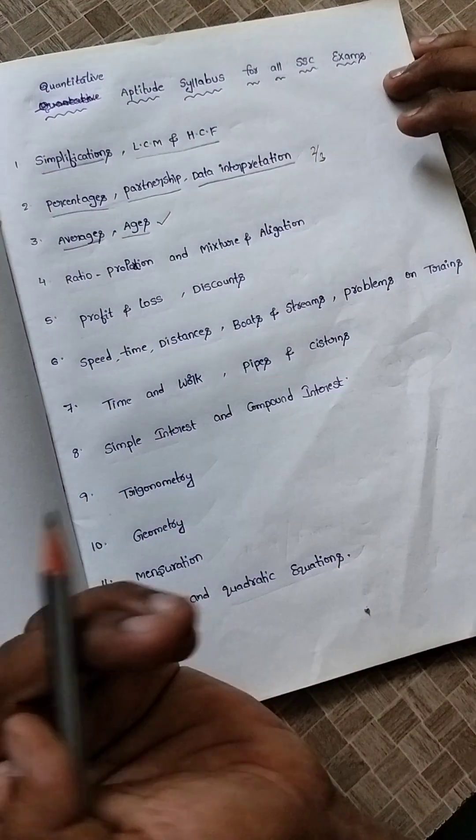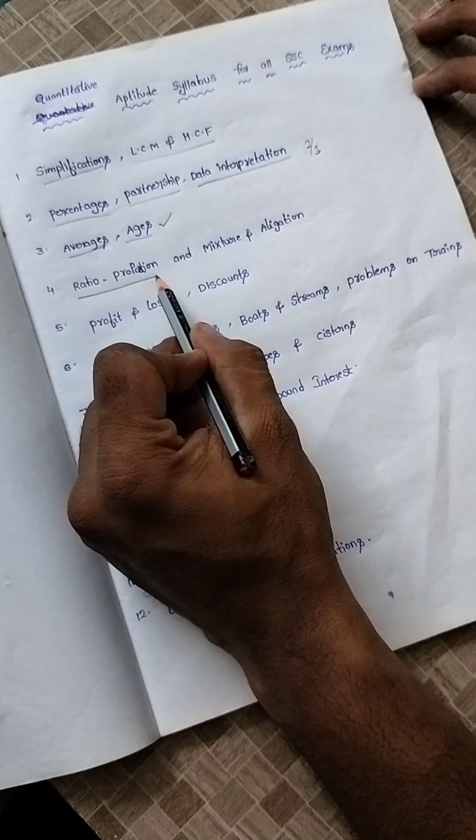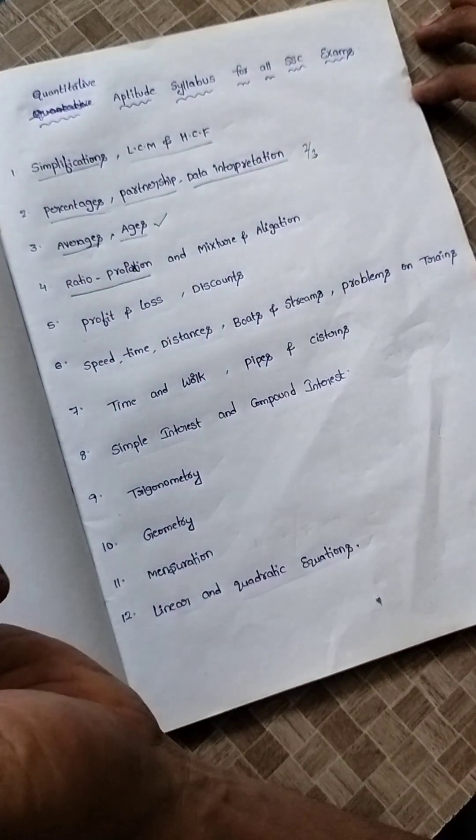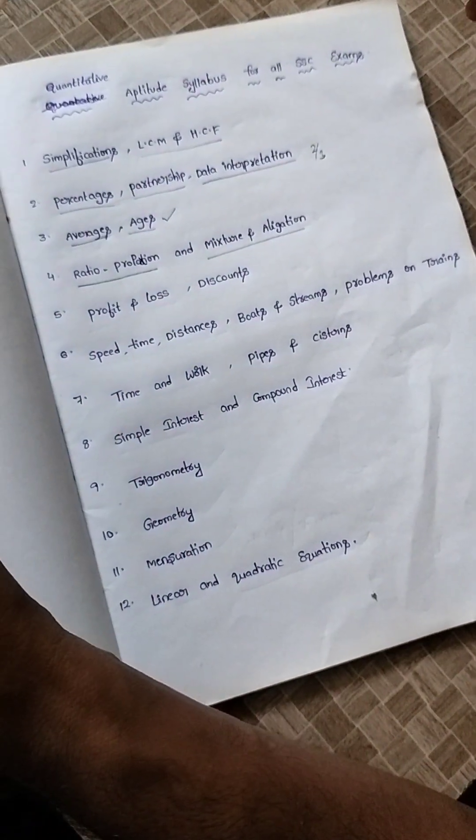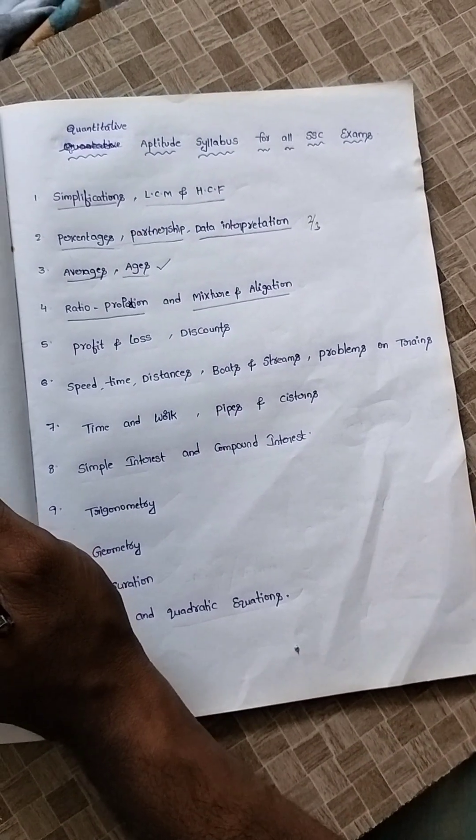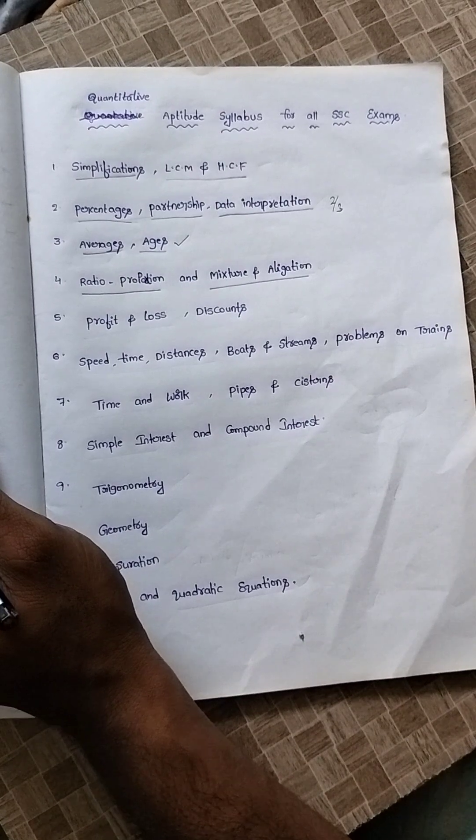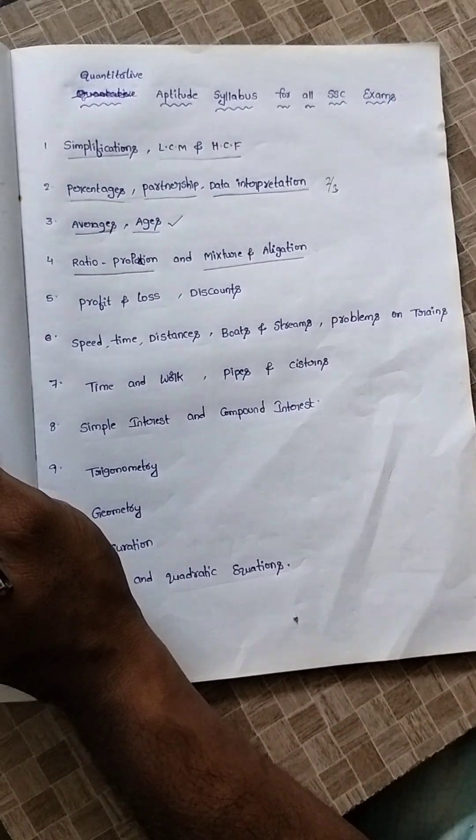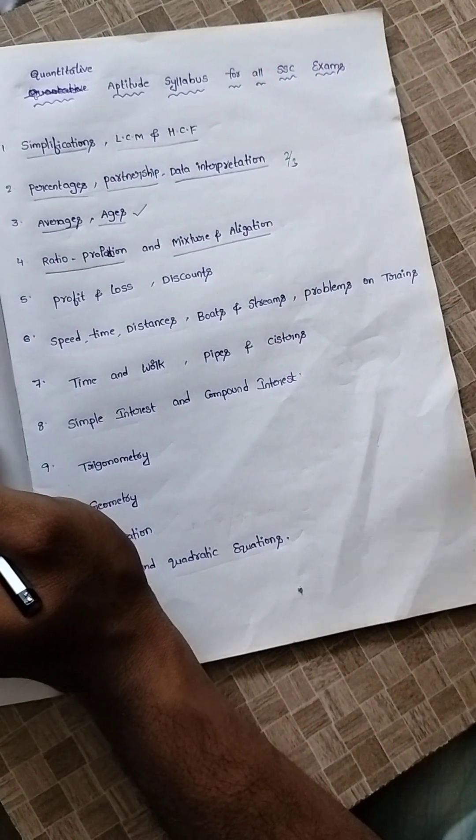Like state police as well as any groups, SSC exams. After that, ratio and proportion. Once you get ratio and proportion, then you will get mixer and allegation. Mixer and allegation means one type of liquid, milk is there, other type of liquid, water is there. Both if you are adding, how much quantity of milk is there separately and how much quantity of water. If I take outside some of the water, then how much quantity of milk will be remaining in the remaining bucket and how much water it contains.